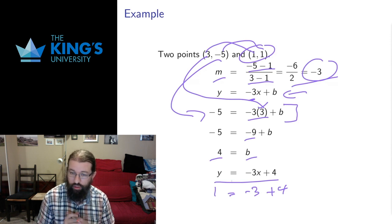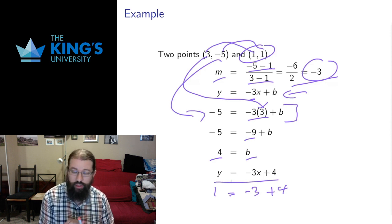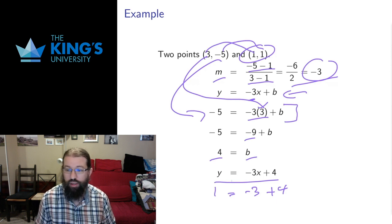And this is how we calculate equations of lines, from either given explicitly the intercept and the slope, or a slope and a point, or two points, which are the most common ways of describing a particular line in the plane.